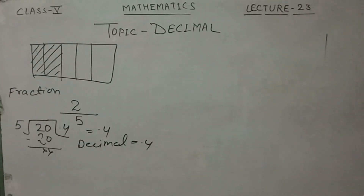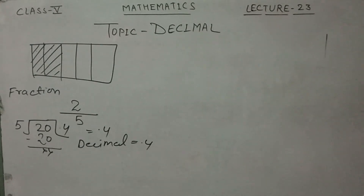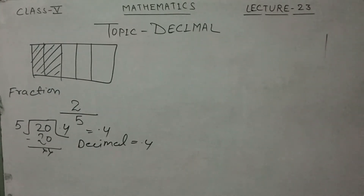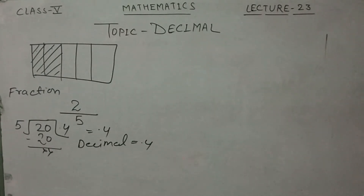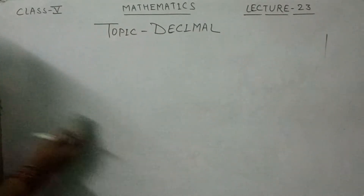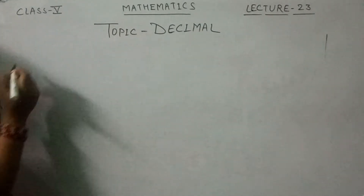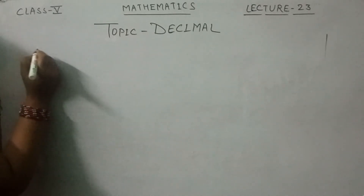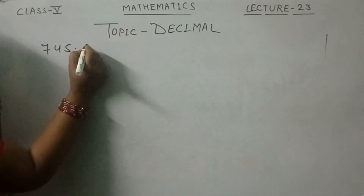In decimals, you have to learn how to add numbers, how to multiply numbers, how to subtract numbers, how to write decimal numbers in ascending or descending order, and also how to do division. But first, I will tell you how to read a decimal number. For example: 745.123.